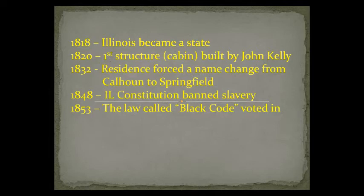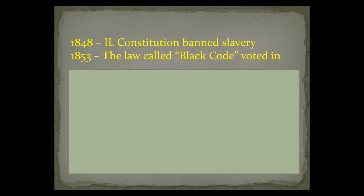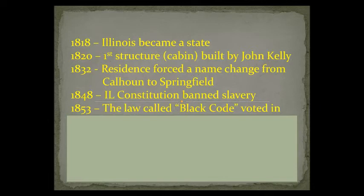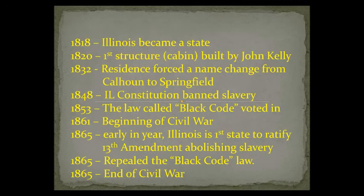So let's take a closer look at that law called the Black Code law. If you already lived in Illinois and were black, you were okay and already a resident. But no more people of the black community could come in to actually live here. They could come in and stay for a 10-day pass and then leave or receive a fine. Books are written on the Black Code law when it was voted in during that time period. So in 1861, that started the Civil War. All this other stuff happened before the Civil War even started.